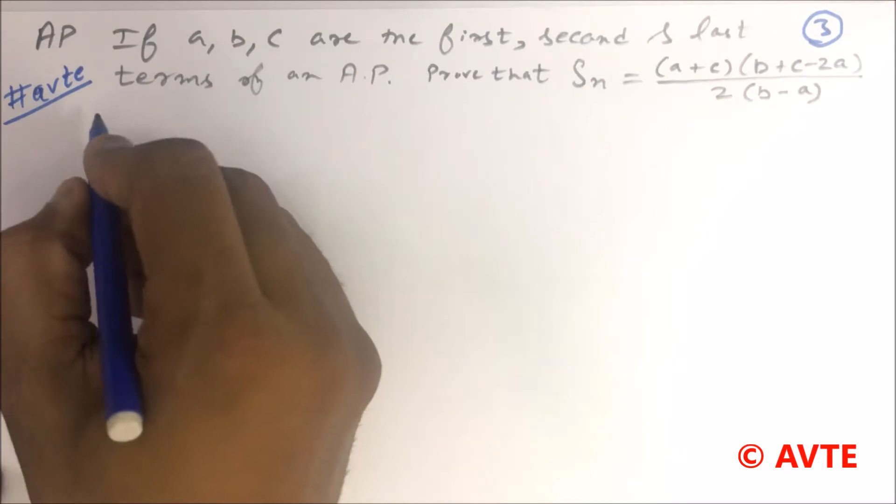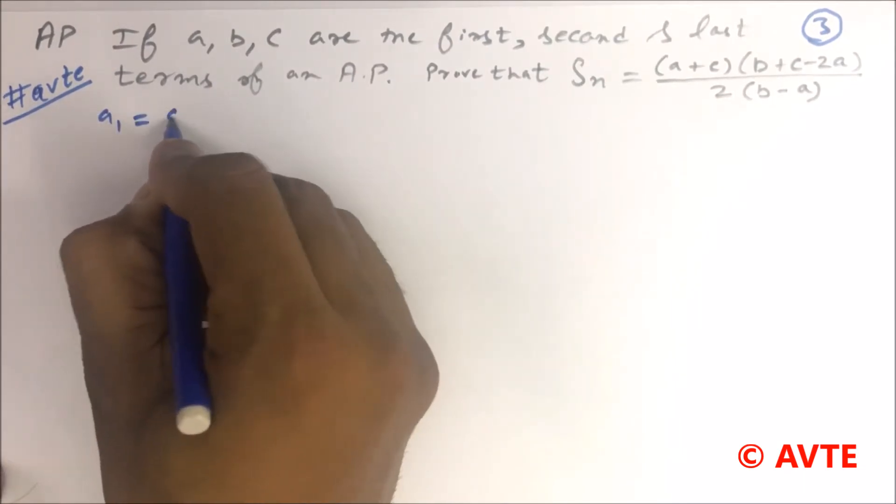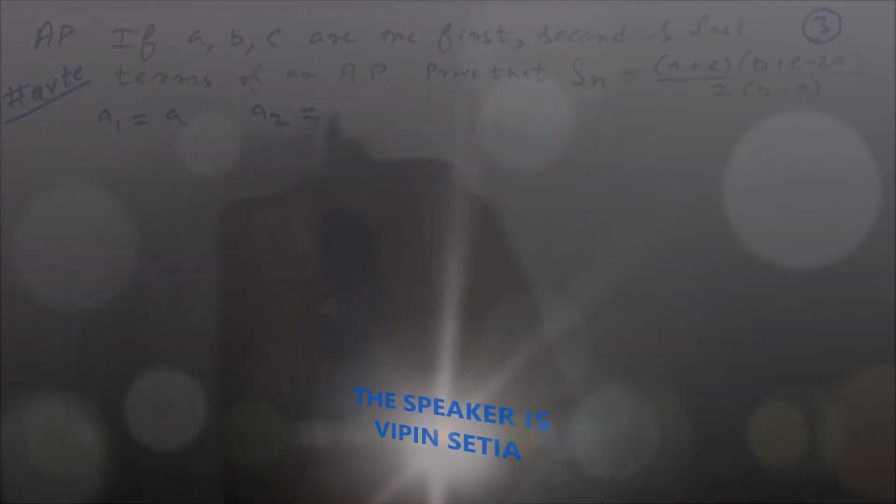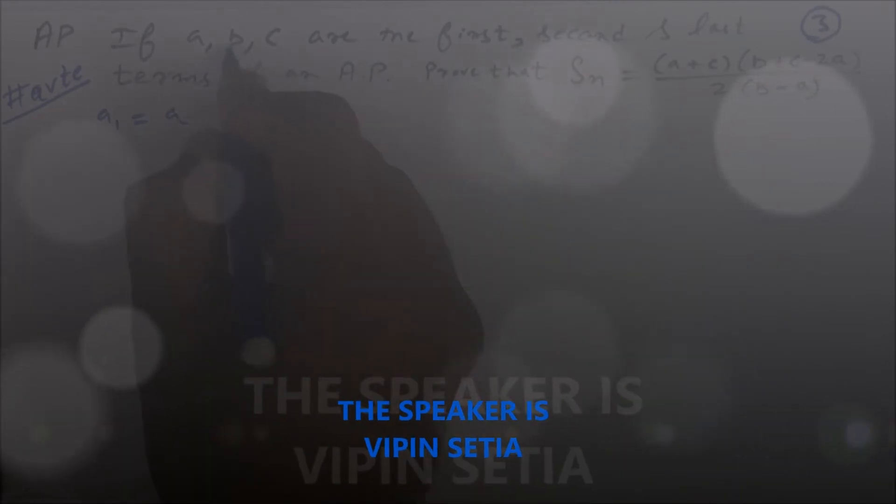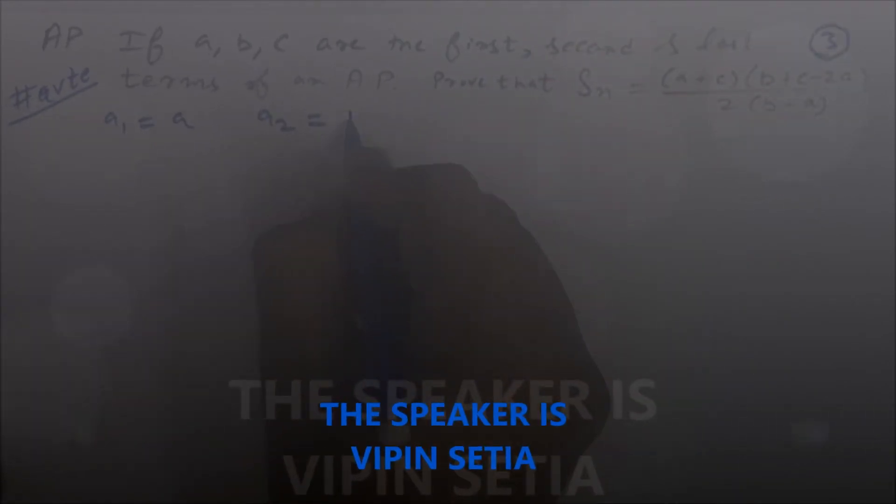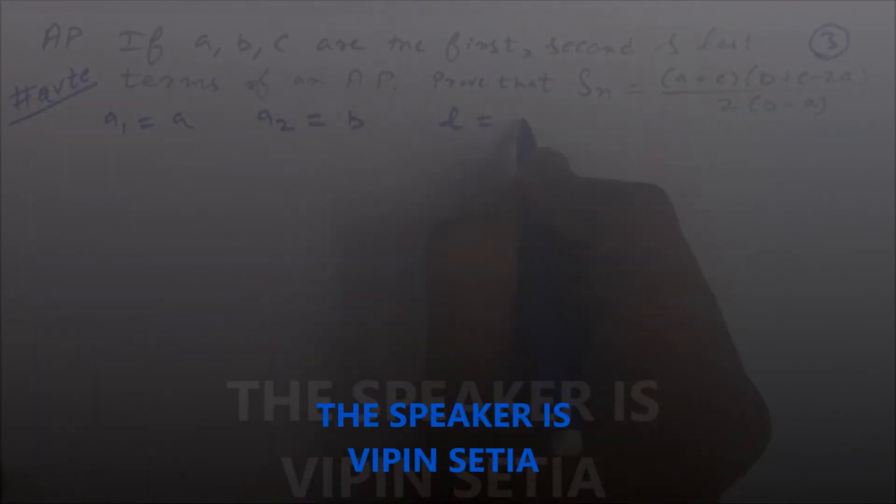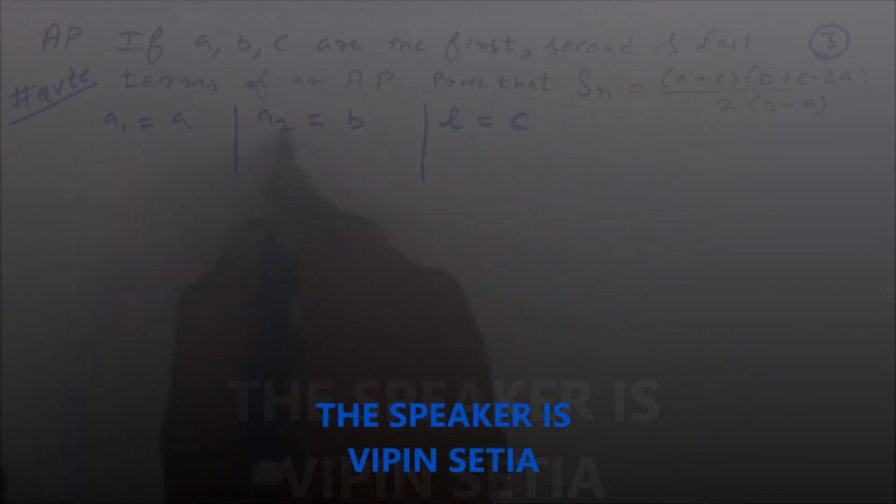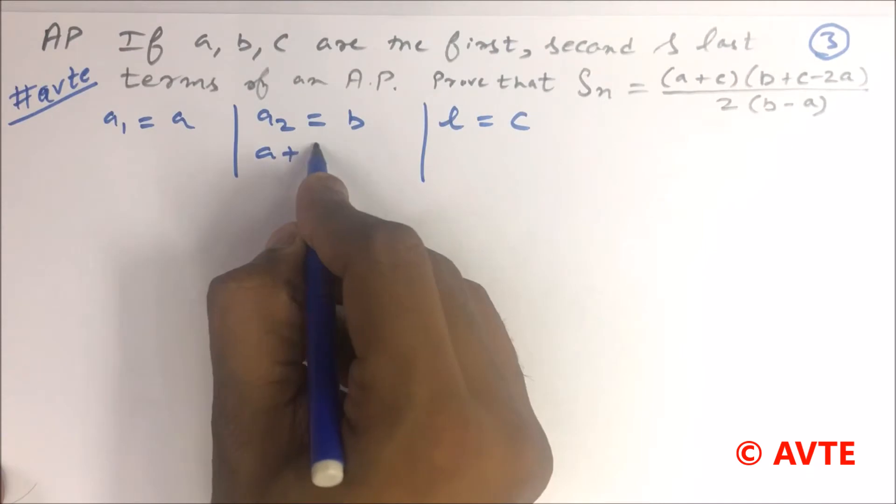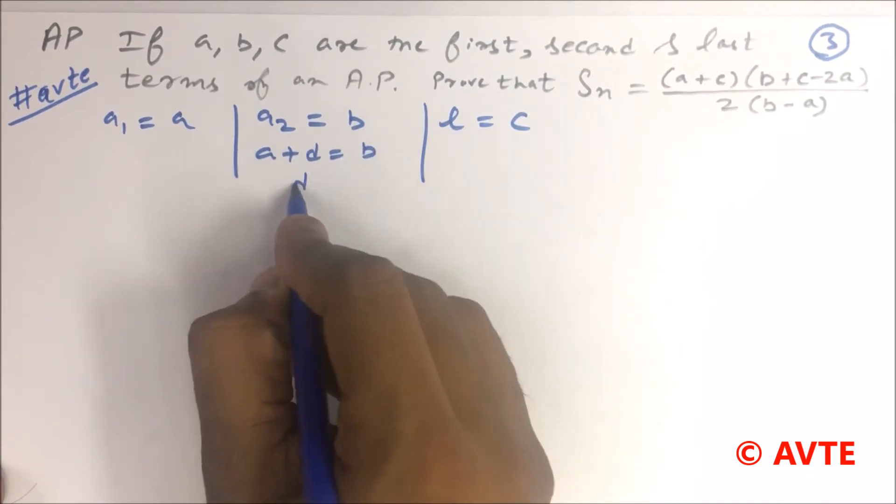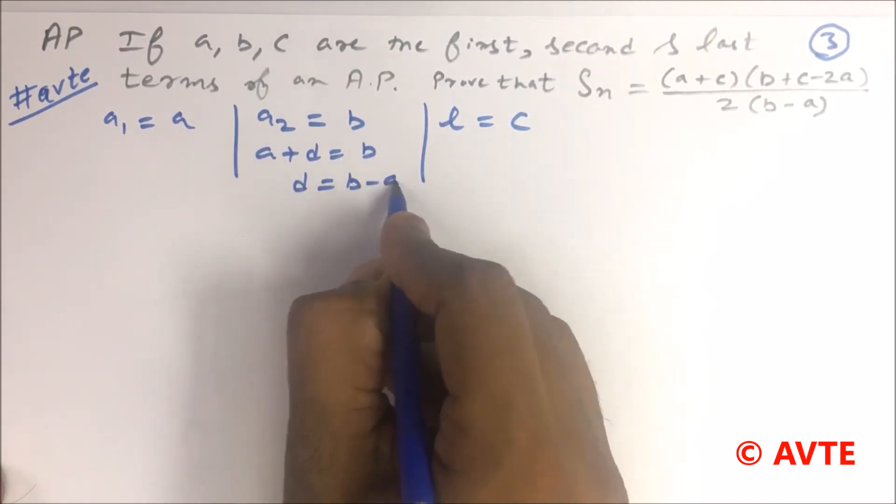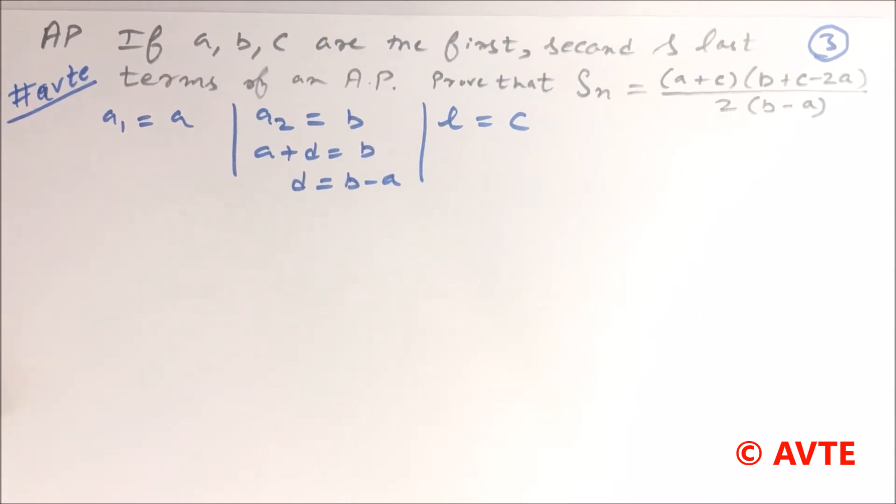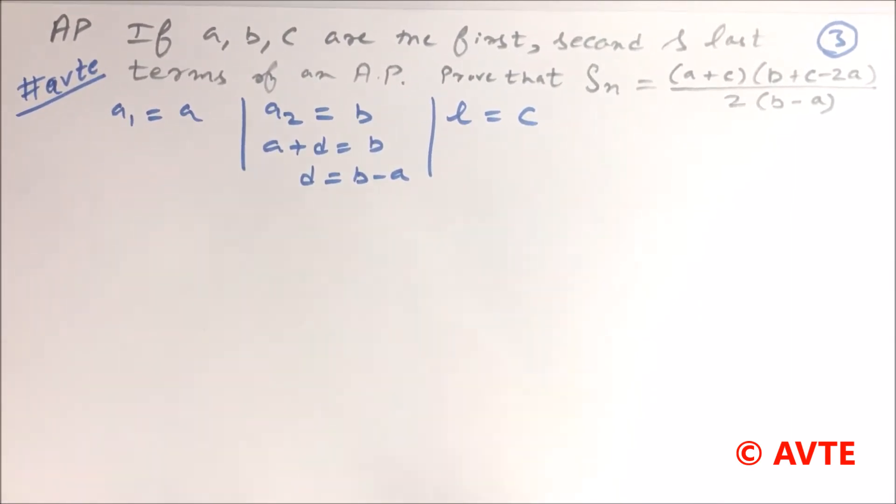Here the first term is A, second term is B, and last term is C. So the first term is A, second term is B, which means A plus common difference is B. That means the common difference D is B minus A, and the last term is C.